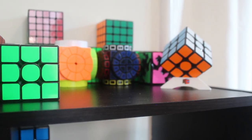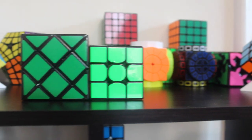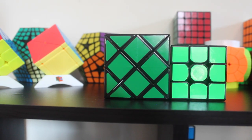So next to the lattice cube here, we have a standard 56 or 57 millimeter cube. This is the Huanglong M that I got from thecubicle.us. As you can tell, the lattice cube is quite a bit bigger than this. It feels a little bit bulky in your hands. However, it doesn't really get in the way of the solve.